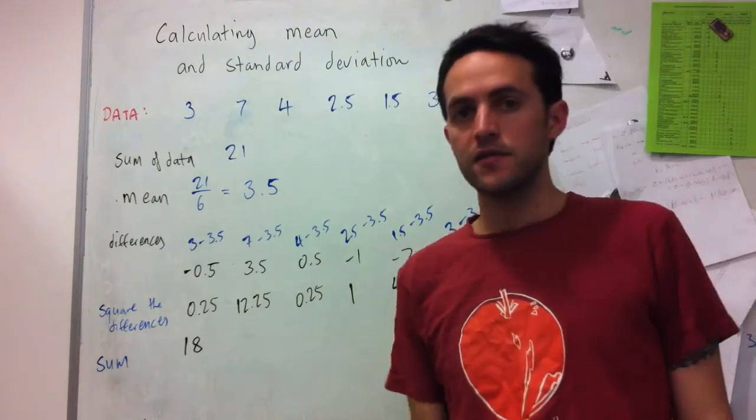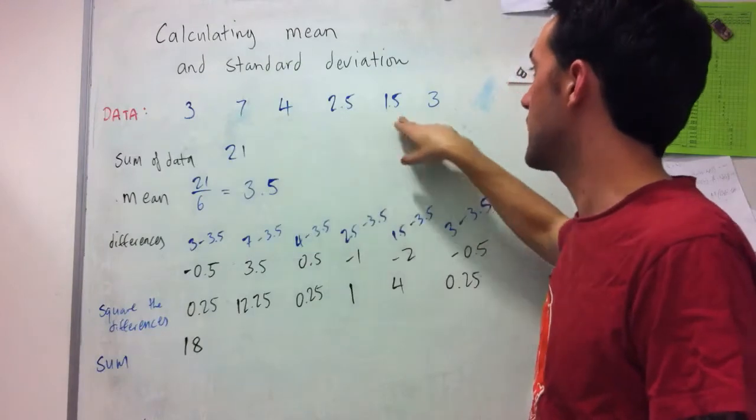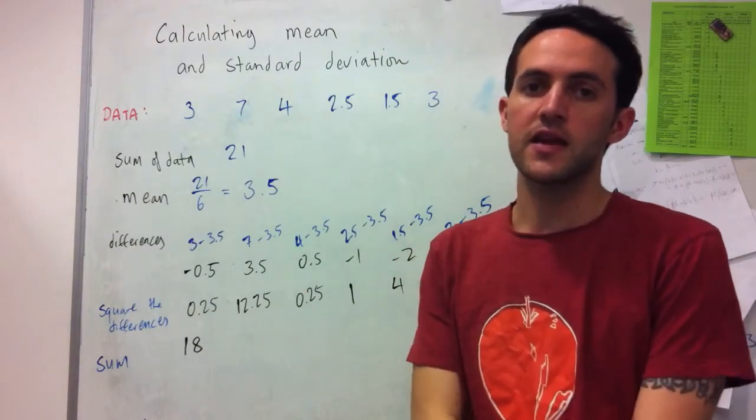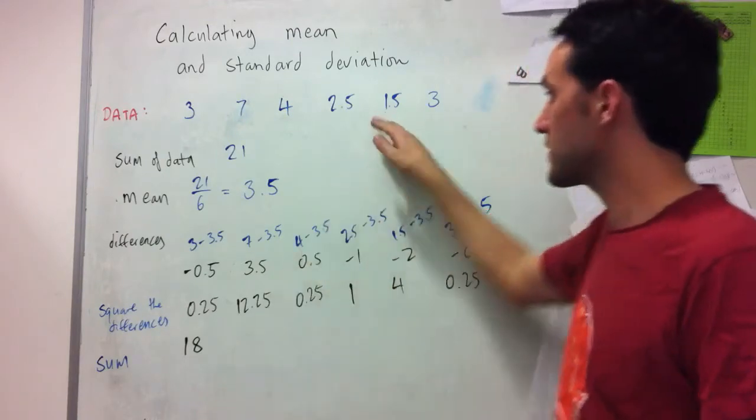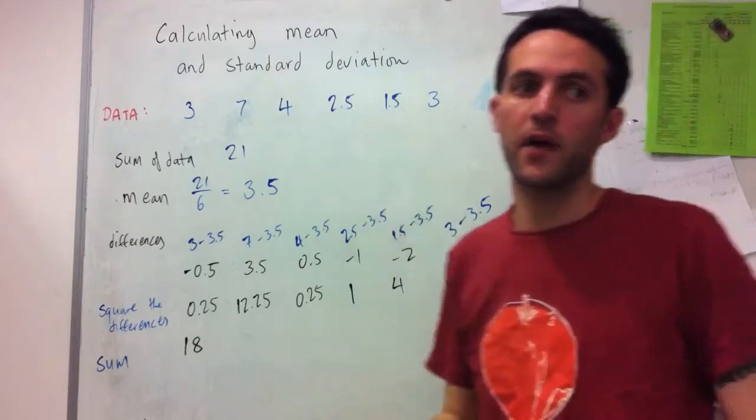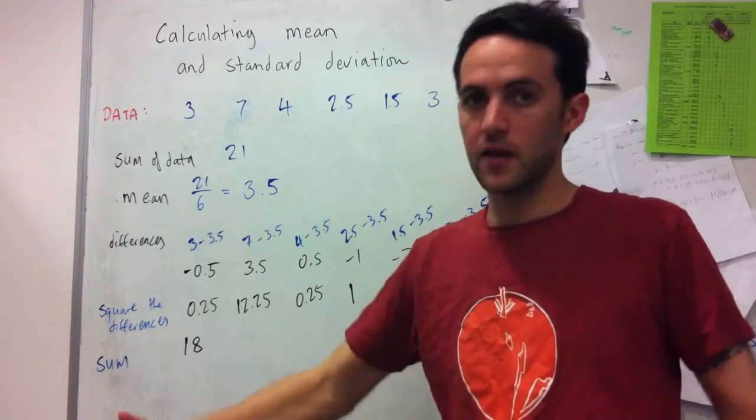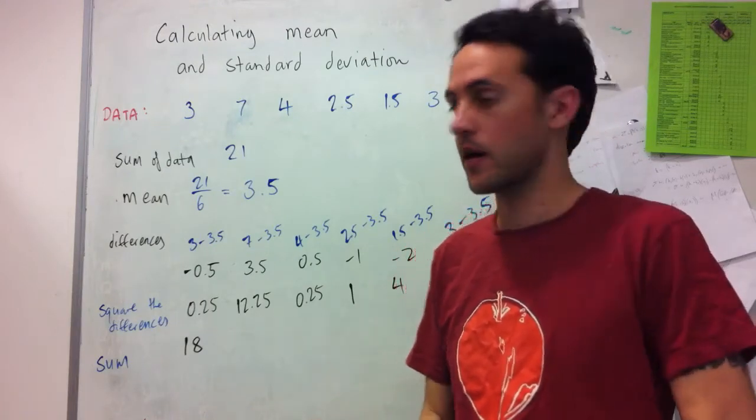And now, instead of dividing by just the 6 evaluations, for this particular type of standard deviation, we actually divide by the number of observations minus 1. So since we've got 6 observations, we're going to divide by 5. But also, if we had 10 observations, we'd divide by 9. If we had 100 observations, we'd divide by 99.